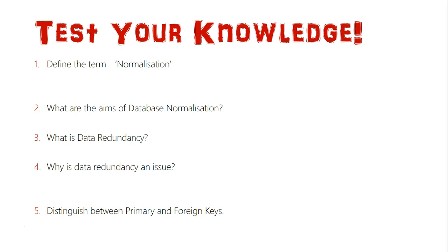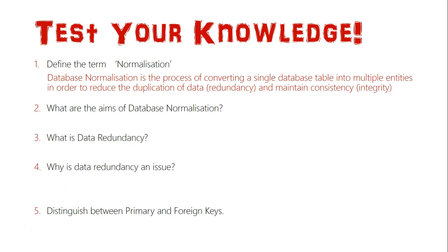Question one — define the term normalization. Database normalization is the process of converting a single database table, basically what is known as a flat file database, into multiple entities in order to reduce the duplication of data, which is data redundancy, and maintain consistency and integrity. So we're turning a flat file database into a relational database.